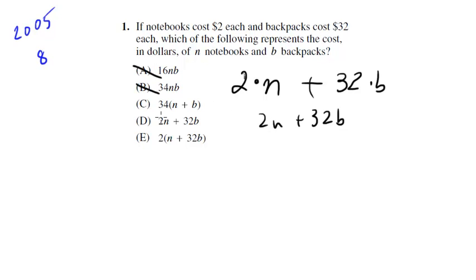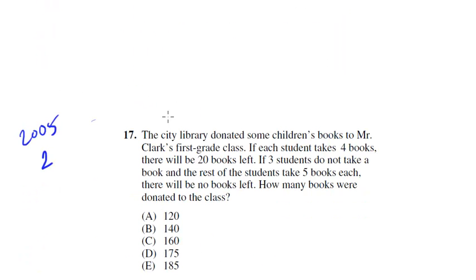So we're looking for 2n plus 32b. The best choice here is D. So we start off with a relatively easy one but now we're going into our first hard question, number 17, last third of the section so one of the hard ones. So let's really take our time and be careful with this one.